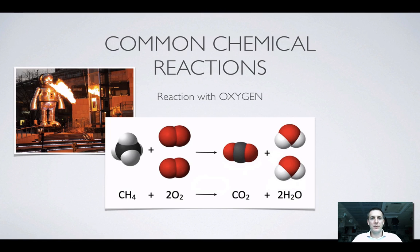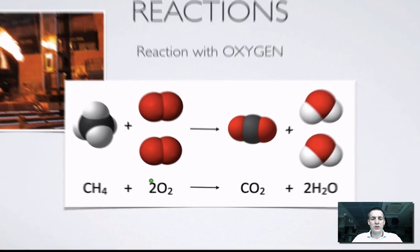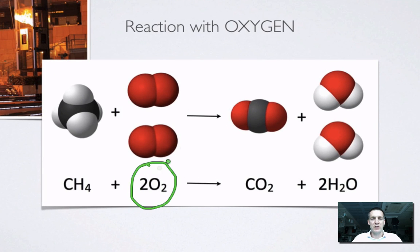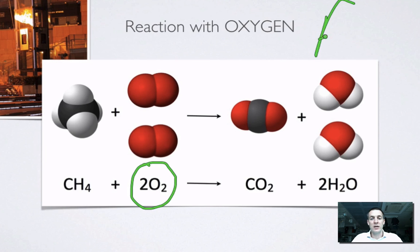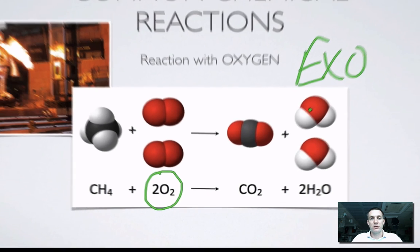Now let's have a look at a common chemical reaction that we might see in year 11, and that is burning. How can you spot a chemical reaction that involves burning? Quite simply, you'll see oxygen as a reactant, because burning reactions are reactions with oxygen. So if we see an equation that says something plus oxygen turns into some other things, then we know that we are burning something. This thing is going to get hot, it's going to release a lot of energy, so it's always going to be exothermic.